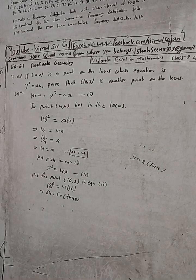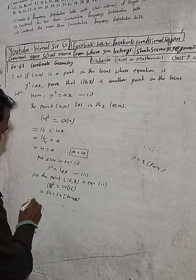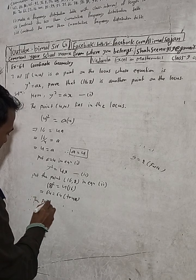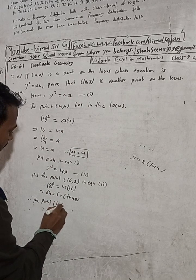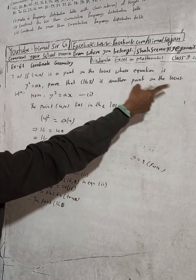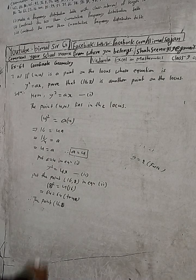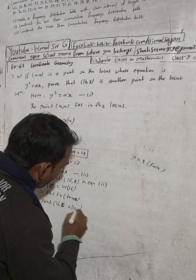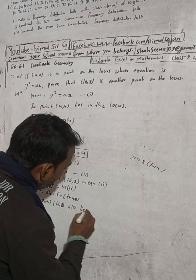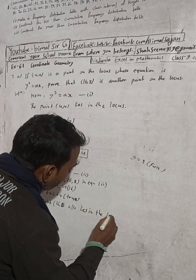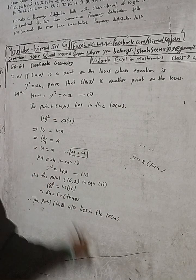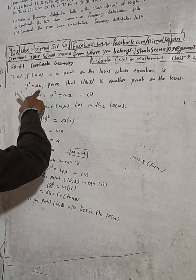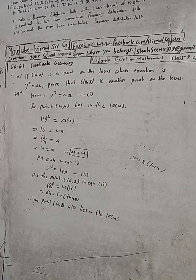Therefore the point (16, 8) also lies on the locus. Hence it is proved that (16, 8) is another point on the locus. So dear students, this is the solution.